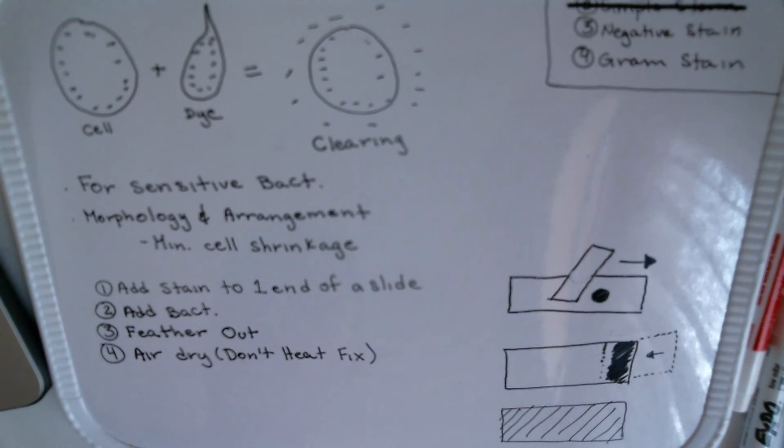Typically when you do your microscope, you'll want to start with the side that you ran to, so the cells over here on this side are going to be way too thick and it's going to be hard to give you a good morphology and arrangement.